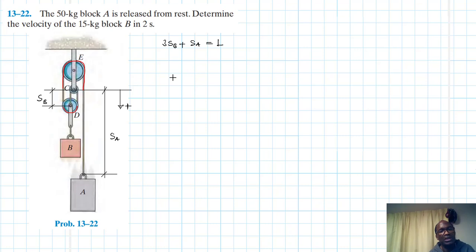First derivative: 3VB plus VA equals zero, a constant. Second derivative of SB, or first derivative of VB, will have the acceleration: 3AB plus AA equals zero. So AA is equal to minus 3AB. We have found the relationship between the acceleration of A to B.